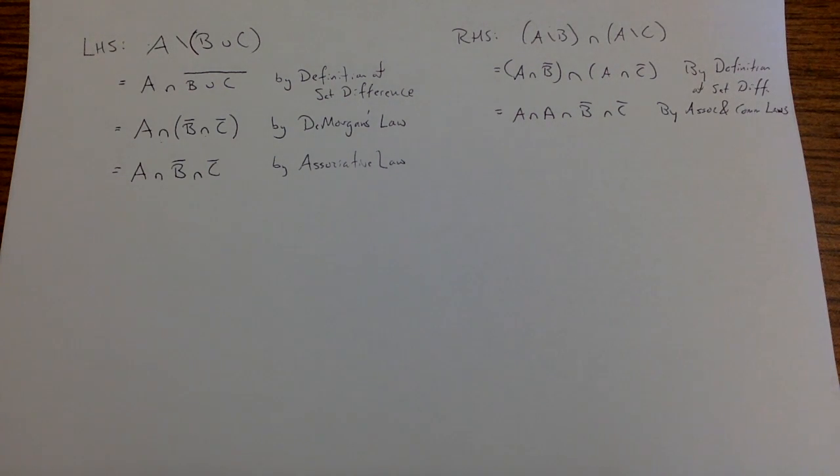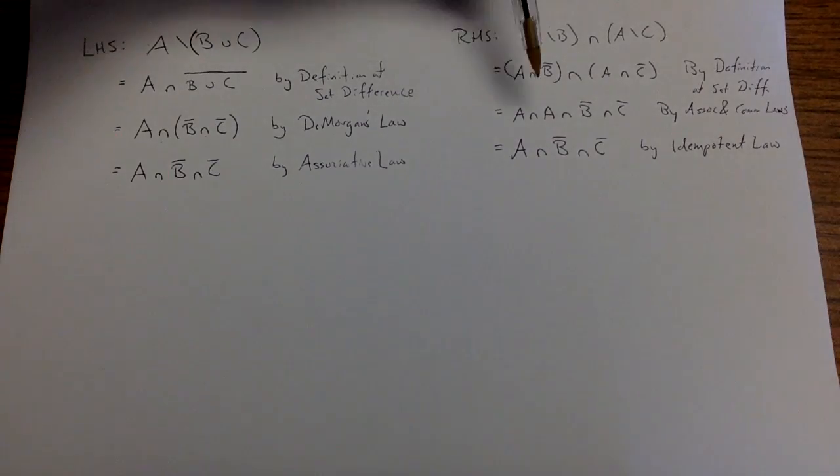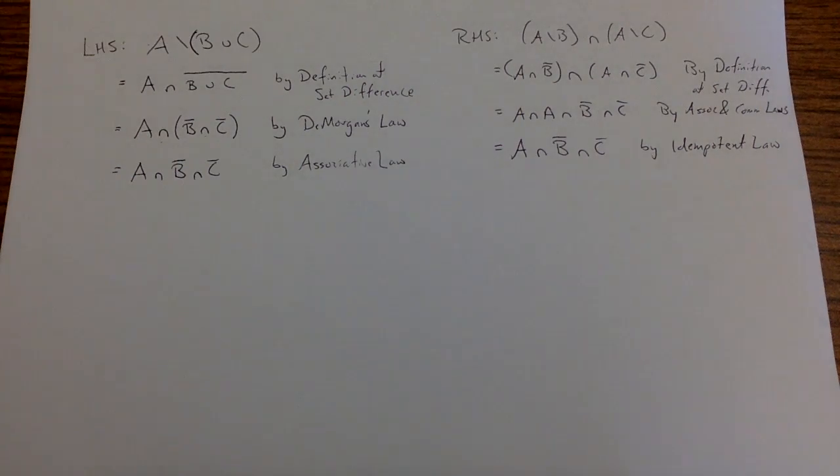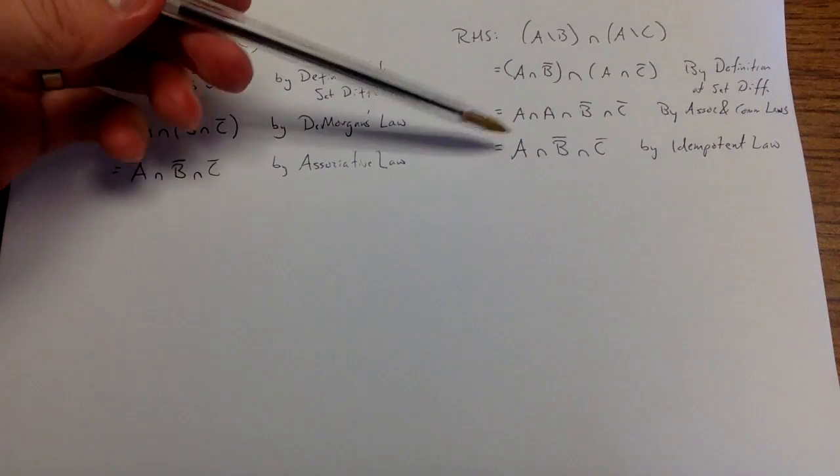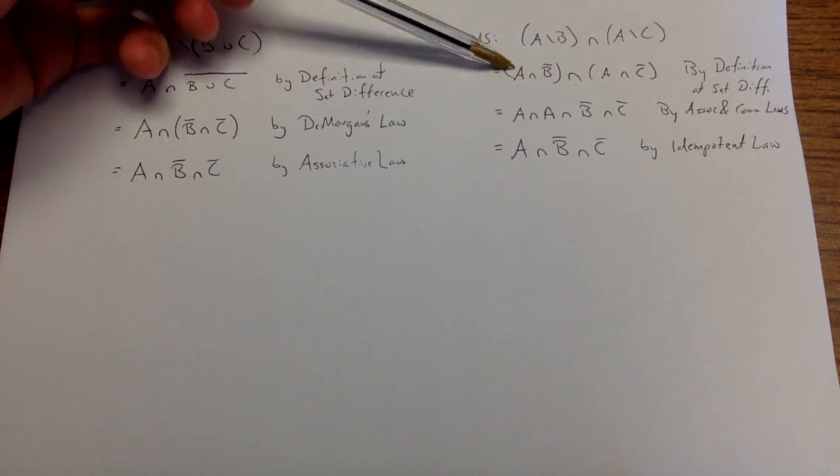And I've got my A's close to each other, which means now I can use my idempotent law to say A intersect A is equal to A. And now I've collapsed these like terms of A and A and I put them into here. And now I see that this set is equal to this set, which means that if I want to start with the left-hand side and move down, I can start using these steps backwards.